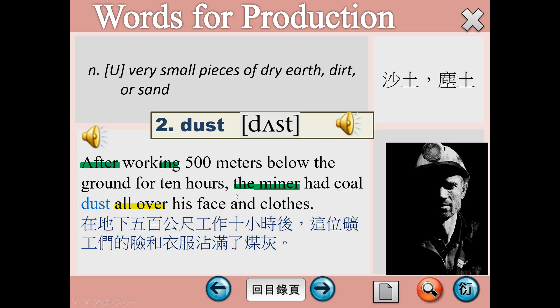請看綠色螢光筆的部分，兩邊豆點隔開，沒有看到連接詞。兩邊原本的主詞都是the miner，就是礦工。這邊是after加V-I-N-G的形式，現在分詞，所以這裡其實是一個分詞構句。在500公尺的地底下工作了將近10個小時之後，the miner had coal dust all over his face and clothes，他的臉上跟衣服上都沾滿了這些塵土。